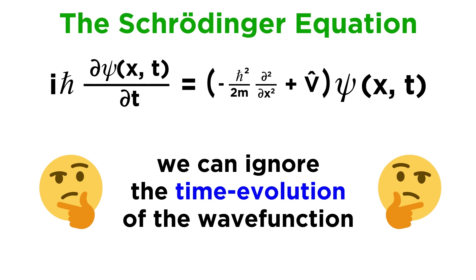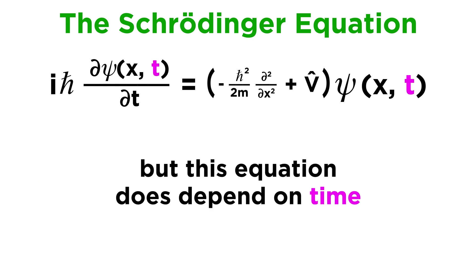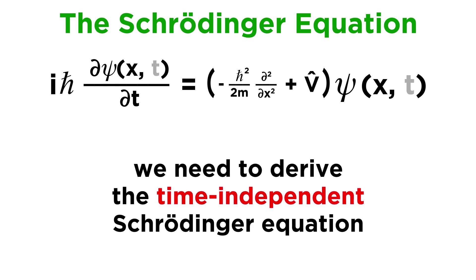This approach of examining the wave function under static conditions seems to make things easier, as it involves ignoring the time evolution of the wave function. But we just saw that the Schrödinger equation does indeed depend on time, so we actually have to deal with this. To do so, we need to find an expression of the Schrödinger equation that does not depend on time. This is called the time-independent Schrödinger equation. Let's go ahead and derive this now.